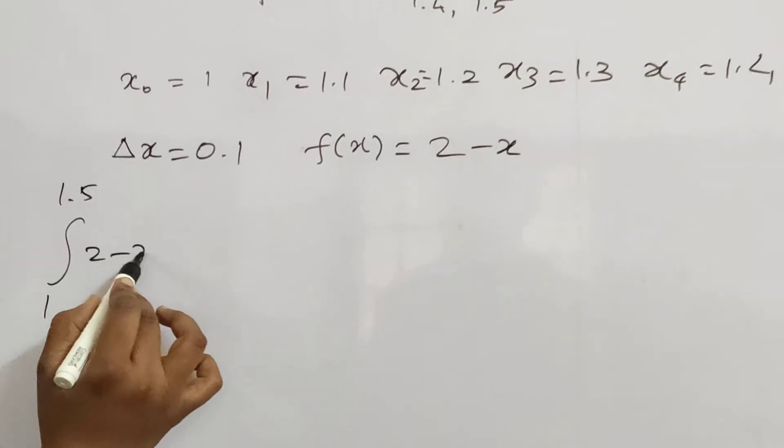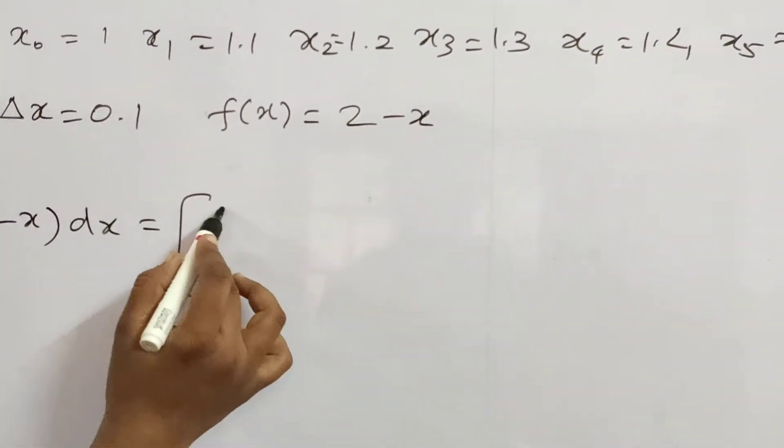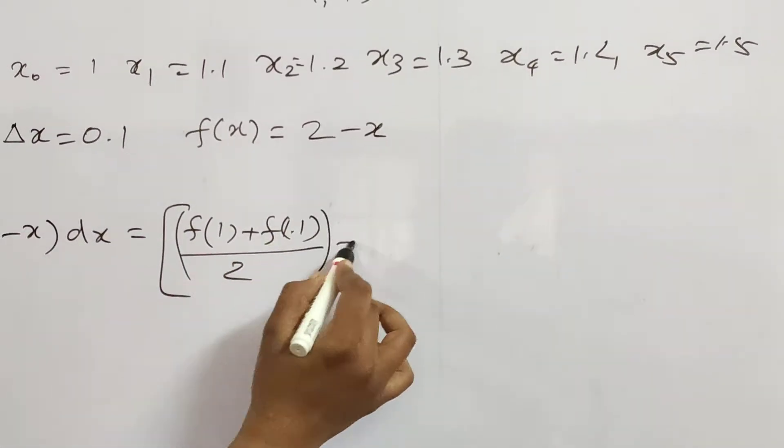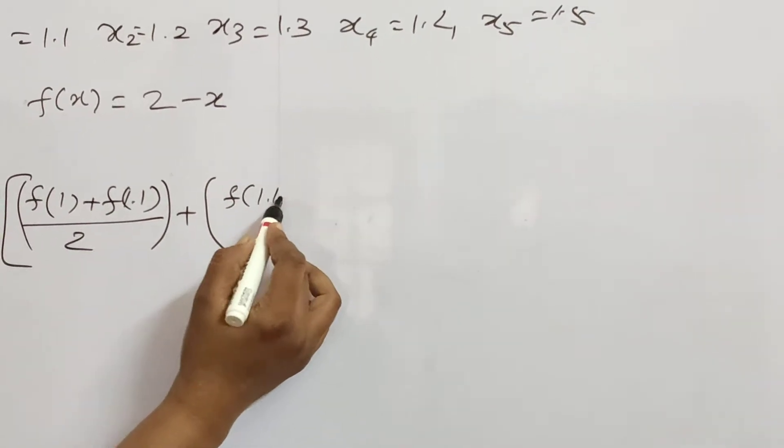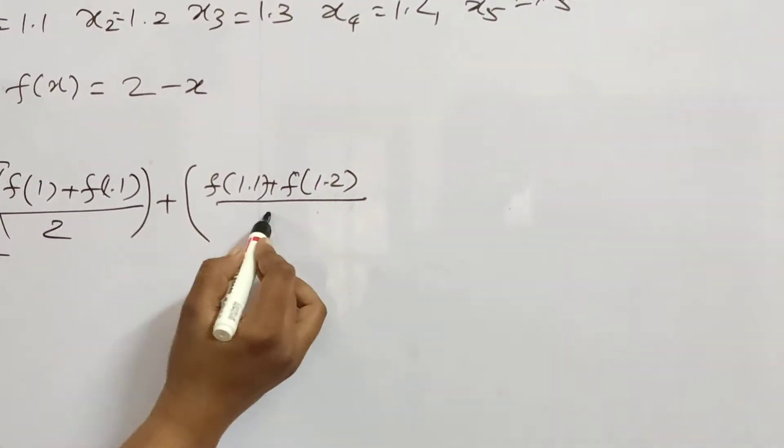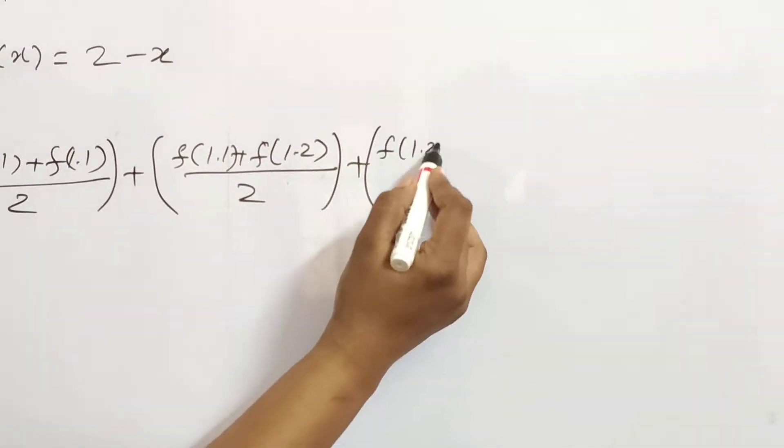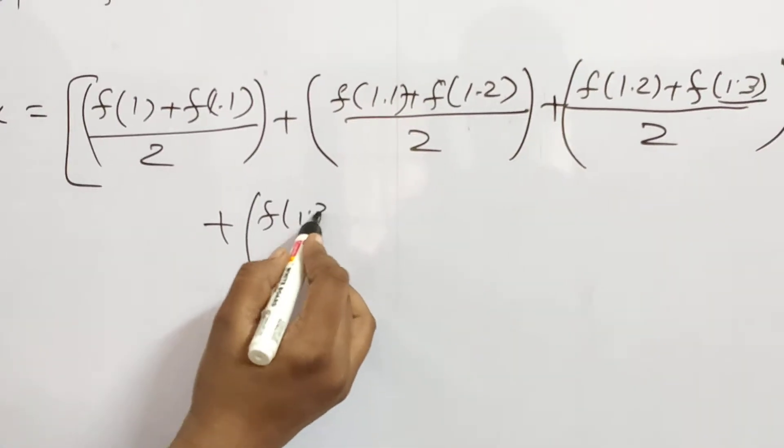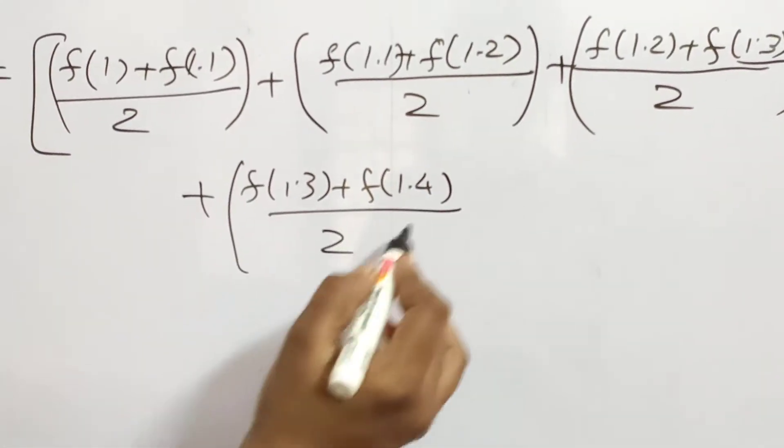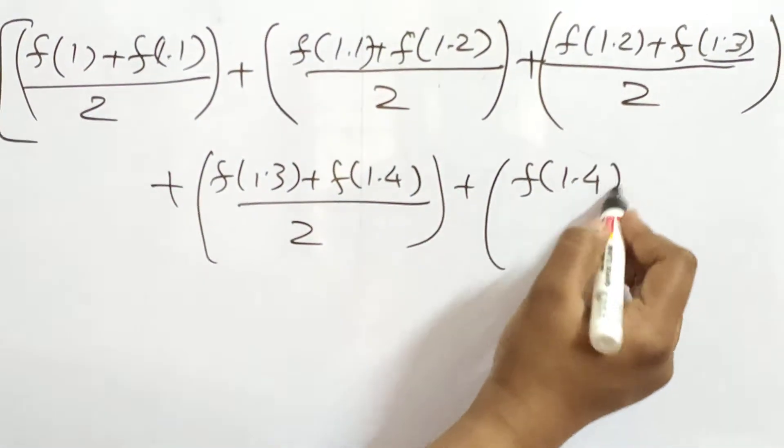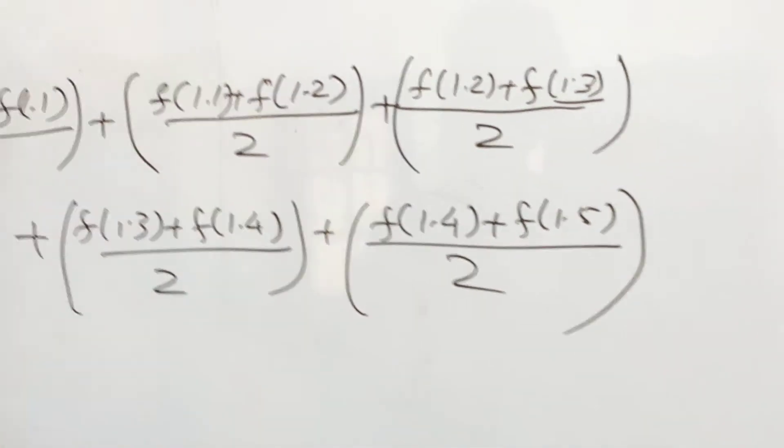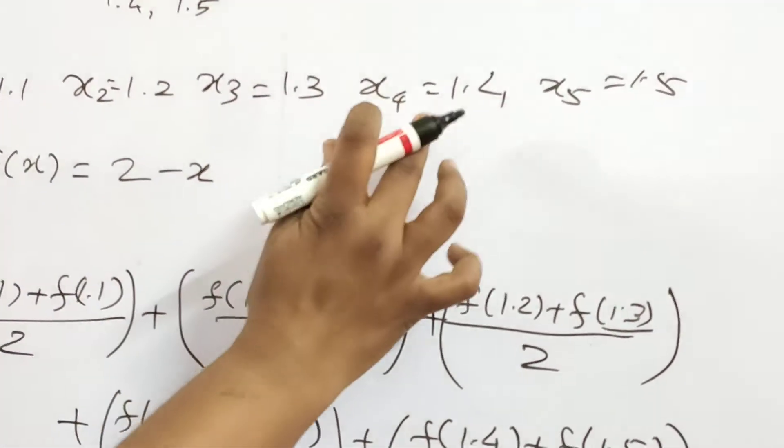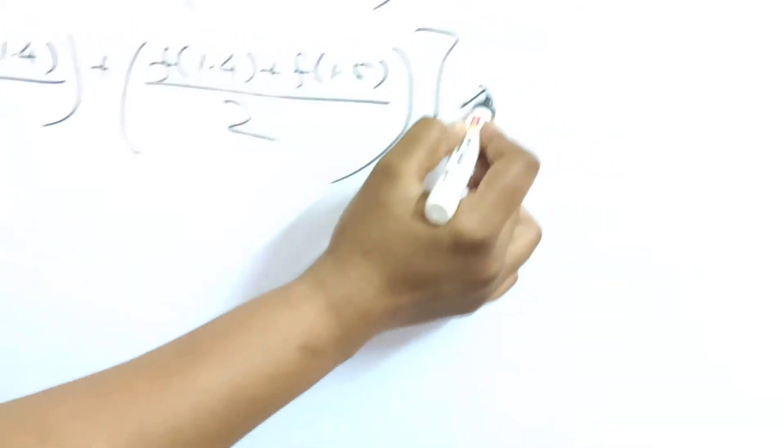Integral 1 to 1.5 of 2 minus x dx equals f of (1 plus 1.1)/2 plus f of (1.1 plus 1.2)/2 plus f of (1.2 plus 1.3)/2 plus f of (1.3 plus 1.4)/2 plus f of (1.4 plus 1.5)/2 into delta x 0.1.